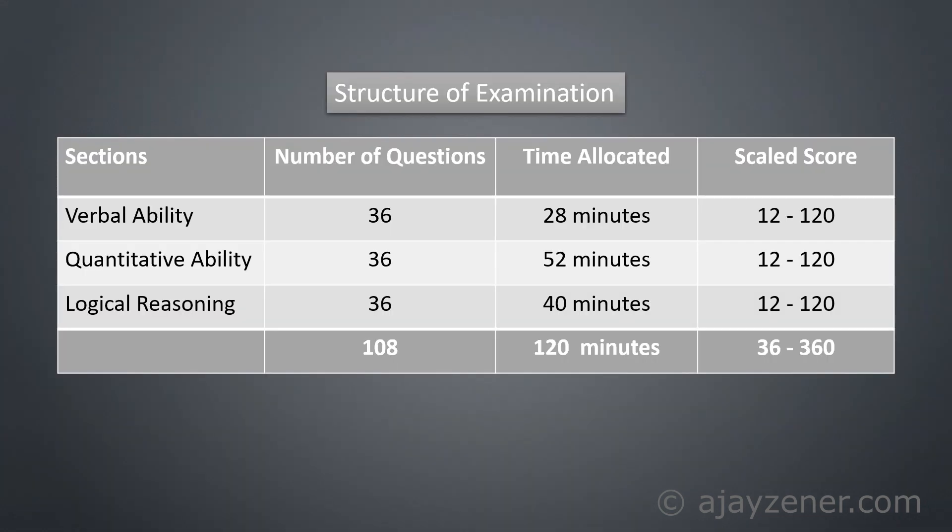Change number one: the structure of the exam. There are three sections — verbal ability, quantitative ability, and logical reasoning — that remains the same, but there are changes in the number of questions and amount of time. In all three sections you have an equal number of questions: 36. In the verbal ability section you get 28 minutes, logical reasoning 40 minutes, and quantitative ability 52 minutes.